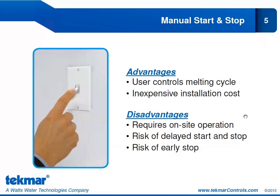For a manual start and stop, it could look something like a light switch in the garage. When you want to operate the snowmelt system, you flick the lever to the on position, and when you want it to stop, you flick it back to off. The advantages are that the user controls the melting cycle — you know exactly how much melting you're doing — and it's very inexpensive to install. However, the disadvantages can be extensive. You have to be on site to operate it, so if you're at work or asleep when it starts snowing, there is no one to flip the switch.